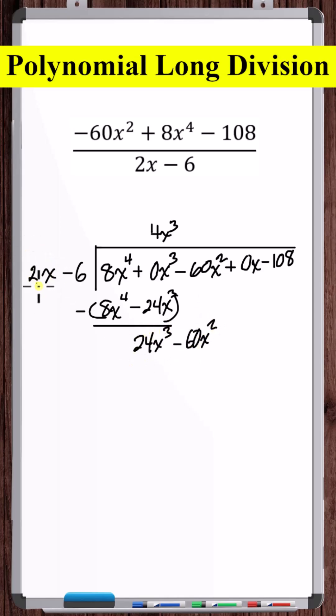Now divide 24x cubed by 2x. That's 12x squared. Multiply 12x squared by the divisor. Subtract these two expressions. Minus 60x squared plus 72x squared is 12x squared.